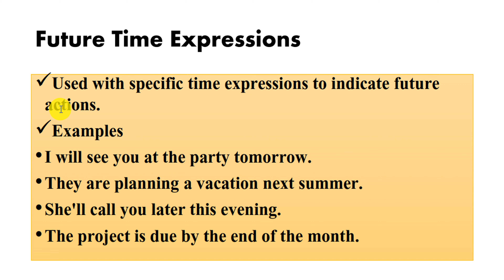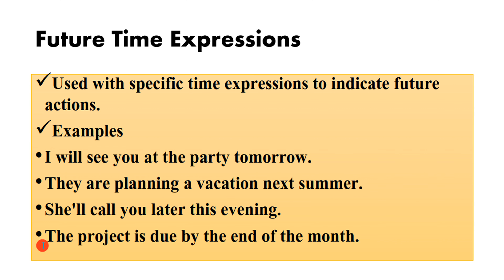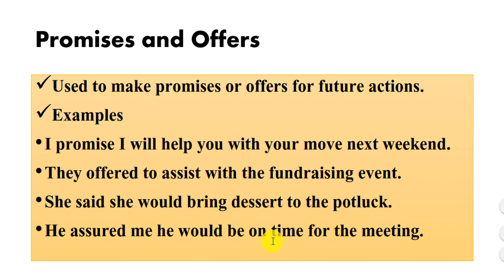Number four is future time expressions. The future tense is used with specific time expressions to indicate future actions. For example: I will see you at the party tomorrow; they are planning a vacation next summer; she will call you later this evening; the project is due by the end of the month.